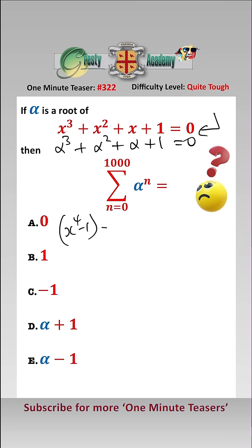Also, we know that x to the four minus one generally equals x cubed plus x squared plus x plus one times x minus one.